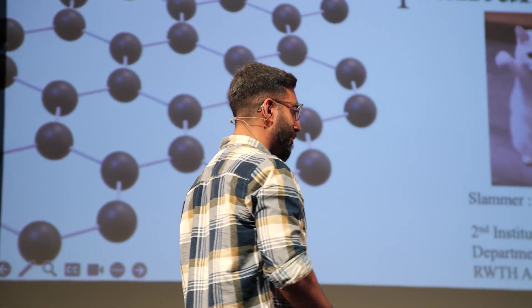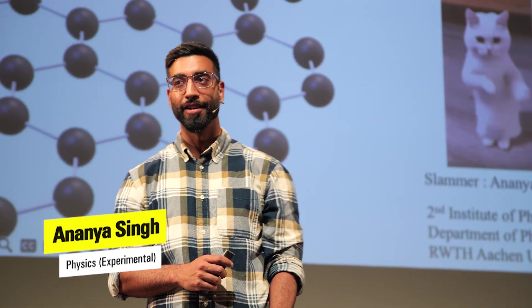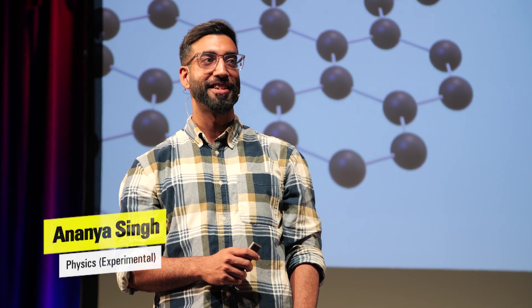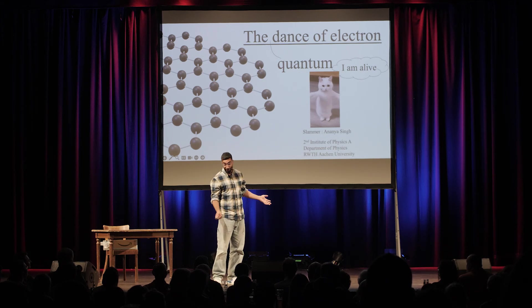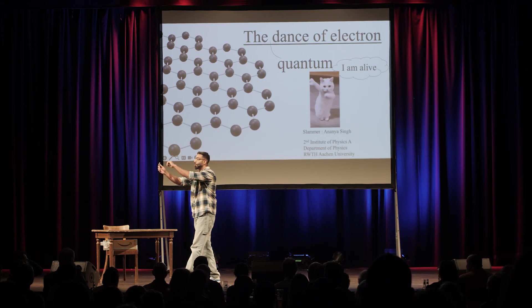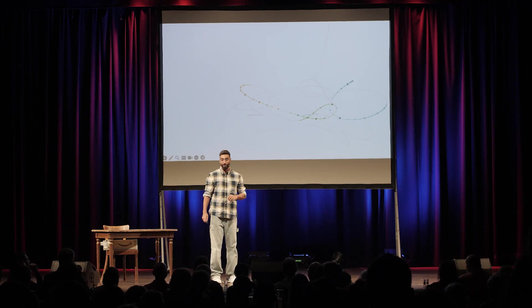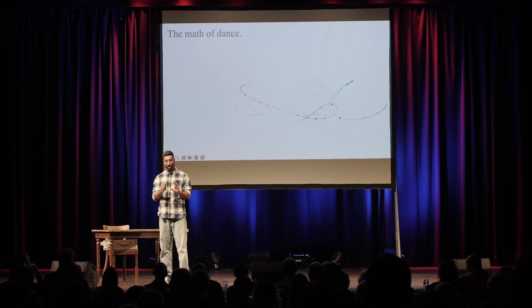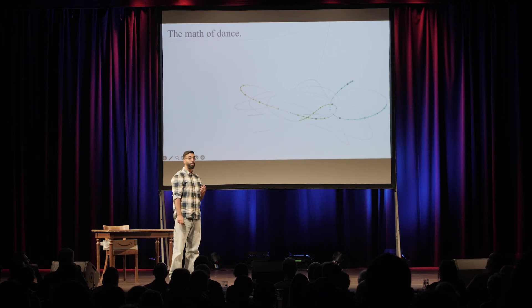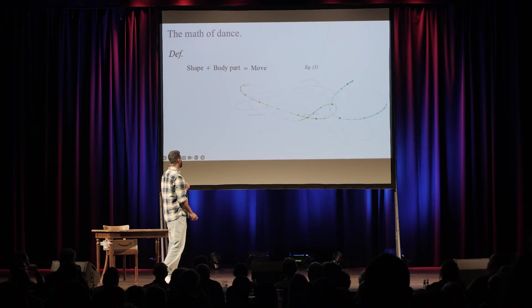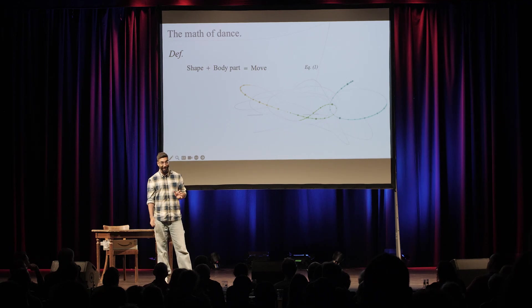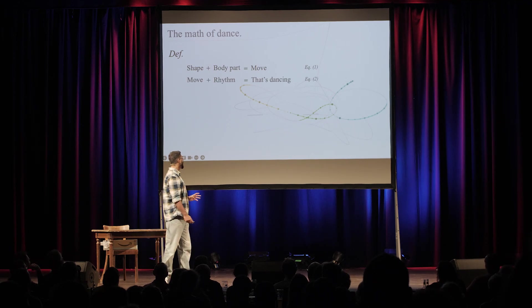I think the first question is, because I'm talking about the dance of electrons — what is dancing? Do you guys know what is dancing? You don't answer this by a statement, you just say, should I show you? But there is a nerd way of doing this, and there's a mathematics of dancing. You just have to think of a shape, and you think of a body part, just attach them, and it becomes a dance move. Next time you go to a party, remember this. So you have to apply this formula: a shape plus a body part gives you a move. But then you need some rhythm here and there, and that would be dancing.